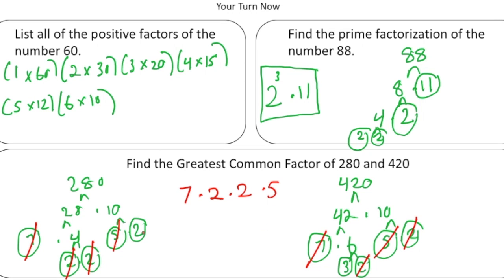There's one more 2 in 280 but no more 2s in 420, so that 2 is not a common factor. And there's a 3 in 420 but no 3 in 280. So multiplying the common factors — 7 times 2 times 2 times 5 — gives us the greatest common factor, which is 140.